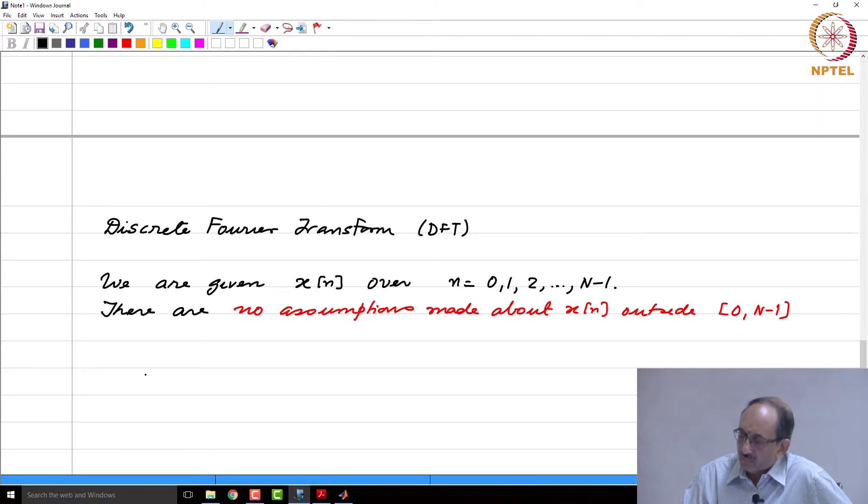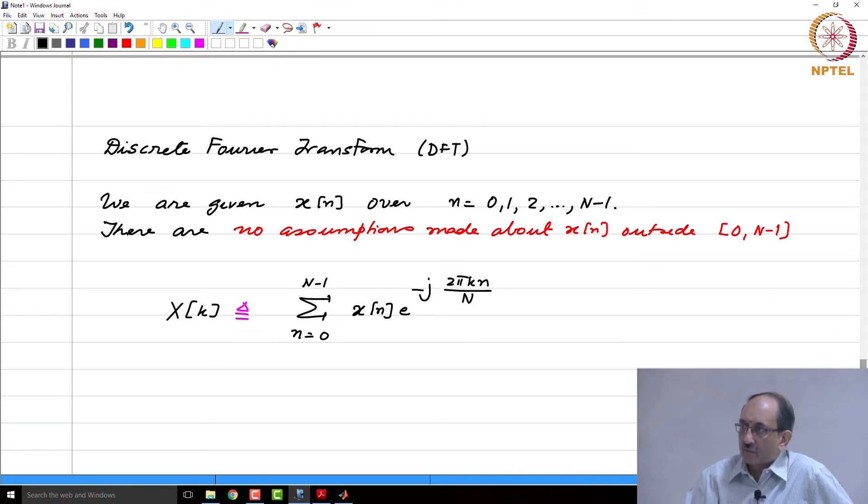And then somebody comes along and says, you want the DFT, here is the DFT. This is the DFT, take it, do not argue with me. X(k) is defined like this: n going from 0 to cap N minus 1, x(n) e to the minus j 2π kn by cap N. This is the definition.